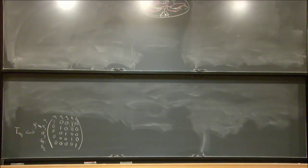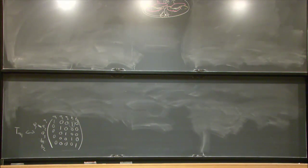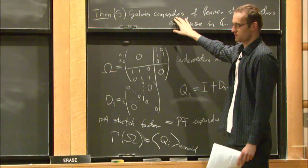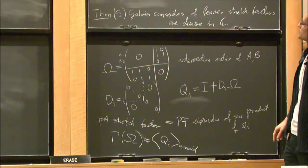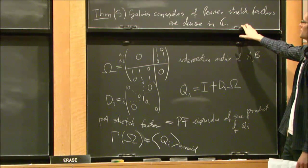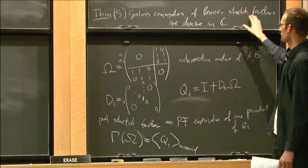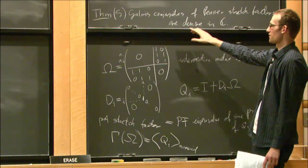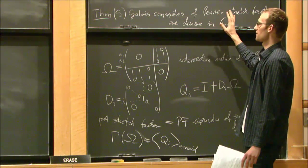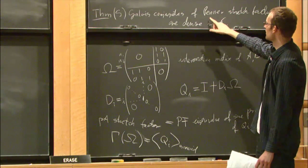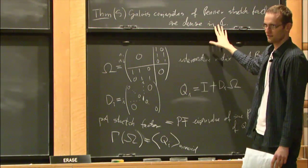From the first talk, it turned out that Galois conjugates of the stretch factors play a role in determining whether a pseudo-Anosov mapping class is coming from Penner's construction or not. So it makes sense to consider where these Galois conjugates might lie in the complex plane. One thing I proved is that stretch factors coming from Penner's construction never have Galois conjugates on the unit circle. One theorem I want to give the idea behind is that these Galois conjugates can be dense in the complex plane.